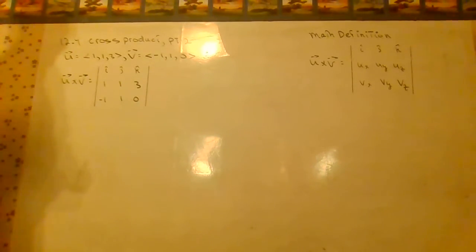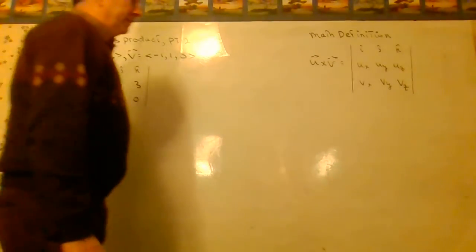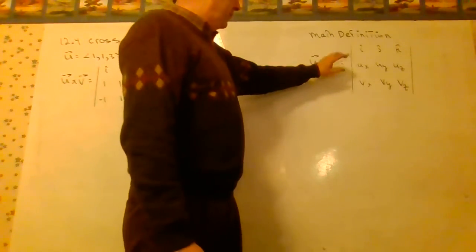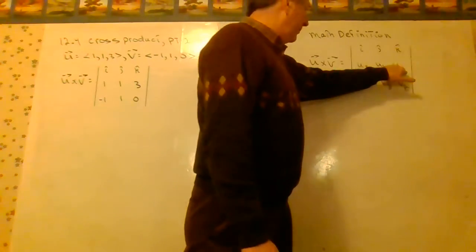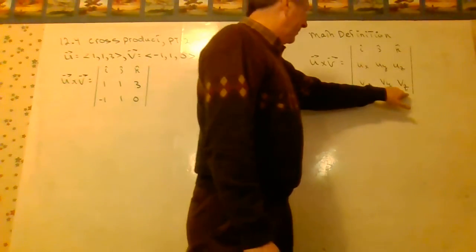12-4 cross product part 2. Here's a math definition of a cross product. U cross V is equal to the determinant of I, J, K in the first row, components of U in the second row, components of V in the third row.